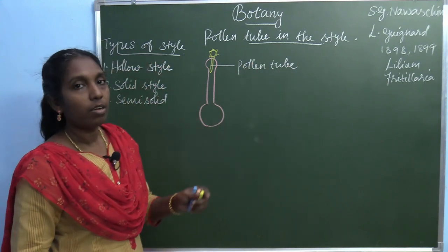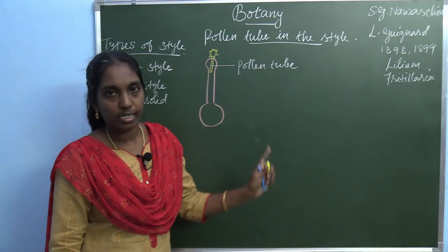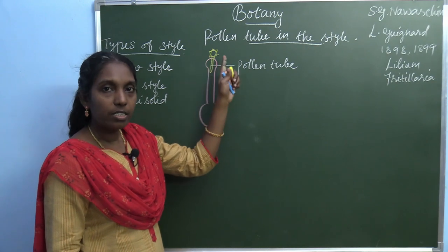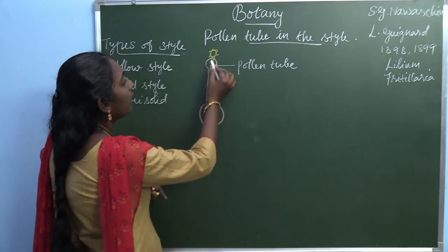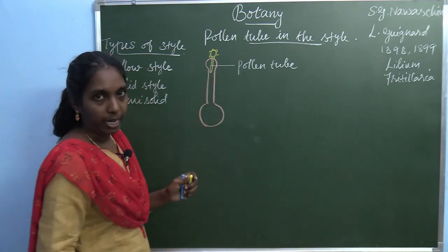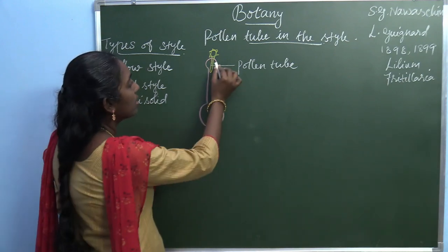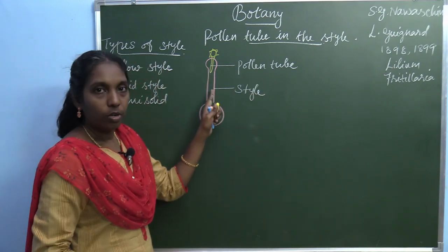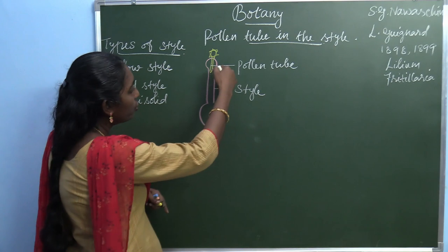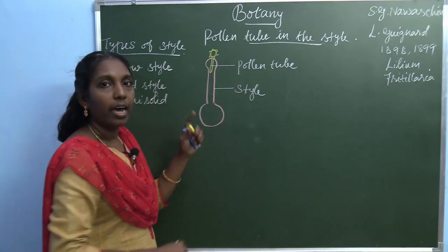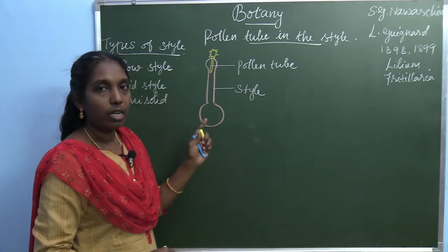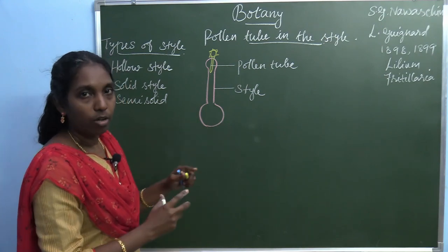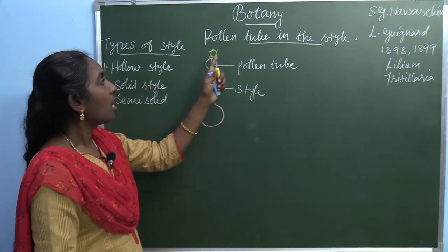Today we start from the pollen tube in the style. The pollen grain when it is dusted on the stigmatic surface, it starts to germinate. This is the pollen tube; this is the stigmatic surface; this is the style. This pollen tube grows towards the style, ovary, and inside the ovary the ovule and embryo sac. It reaches the embryo sac and fuses with the egg and forms the zygote. That is the process of fertilization.